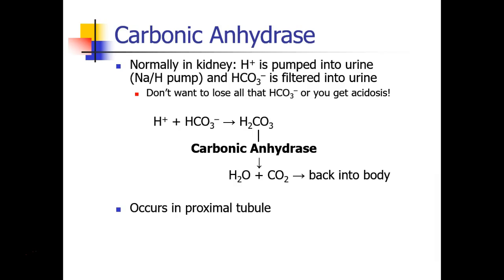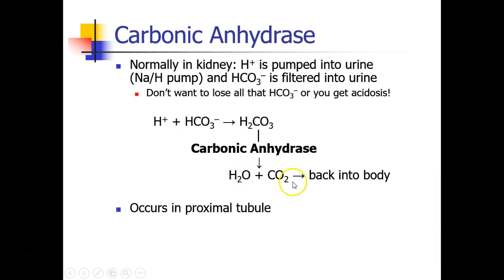When the kidney is functioning normally, a lot of sodium is filtered into the renal tubule and it needs to be pumped out so the body doesn't lose a ton of sodium. One of the ways this happens is in the proximal tubule — there is a sodium-hydrogen ion pump, so sodium leaves the tubule and hydrogen ion comes in to replace it. Meanwhile, bicarbonate is filtered into the urine at the glomerulus. The body has a way to deal with this using the enzyme carbonic anhydrase: the hydrogen ion and the bicarb come together to form carbonic acid, and carbonic anhydrase converts it into water and CO2, which can then be absorbed back into the body.